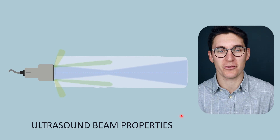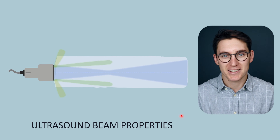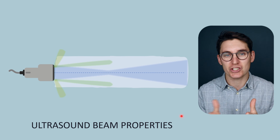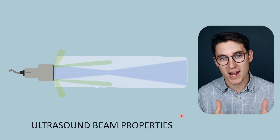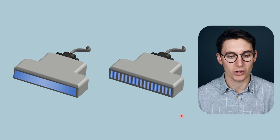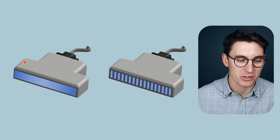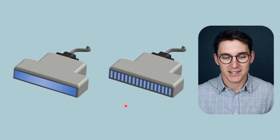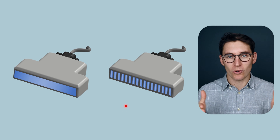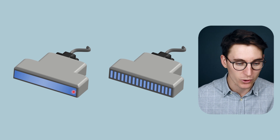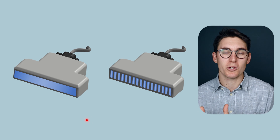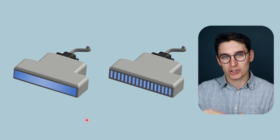We've looked at some of the ultrasound probes available to us as well as the various different transducer types. Now let's turn our attention to the ultrasound beam itself - its shape and properties that change it. We can broadly separate transducer types into single element transducers and multi-element transducer arrays. When learning about the ultrasound beam, it's useful to start with a single element transducer, as those principles will also apply to multi-element arrays.